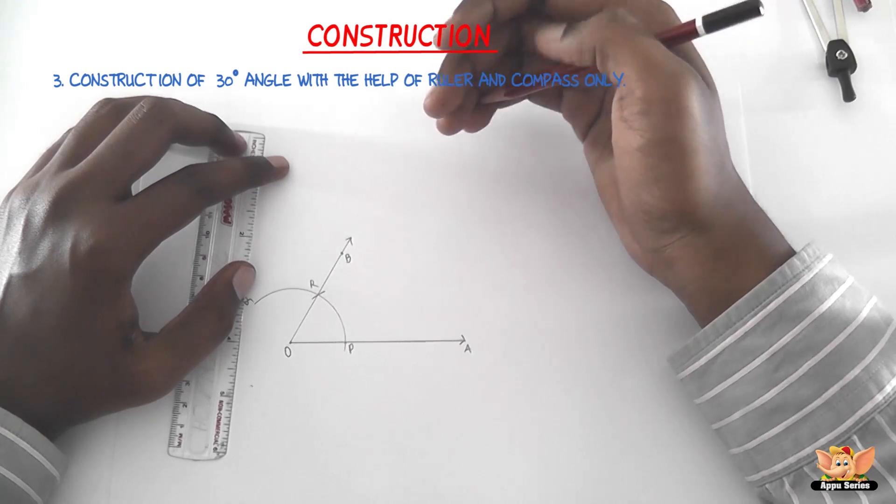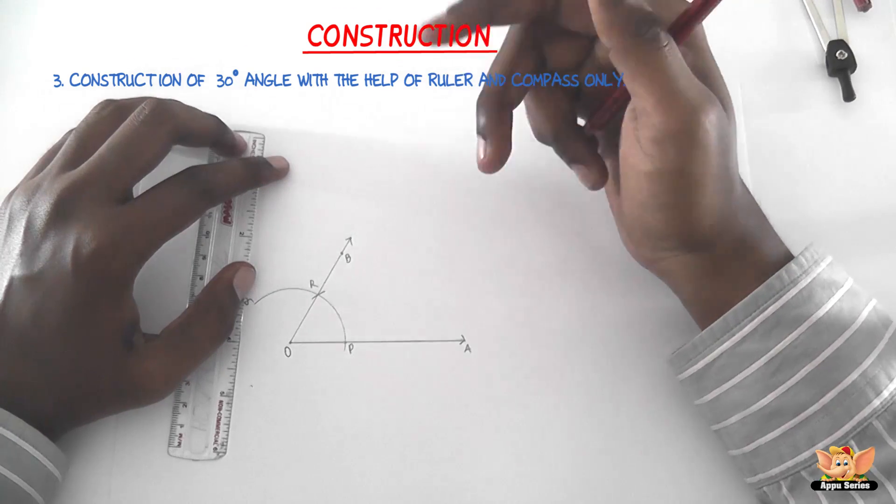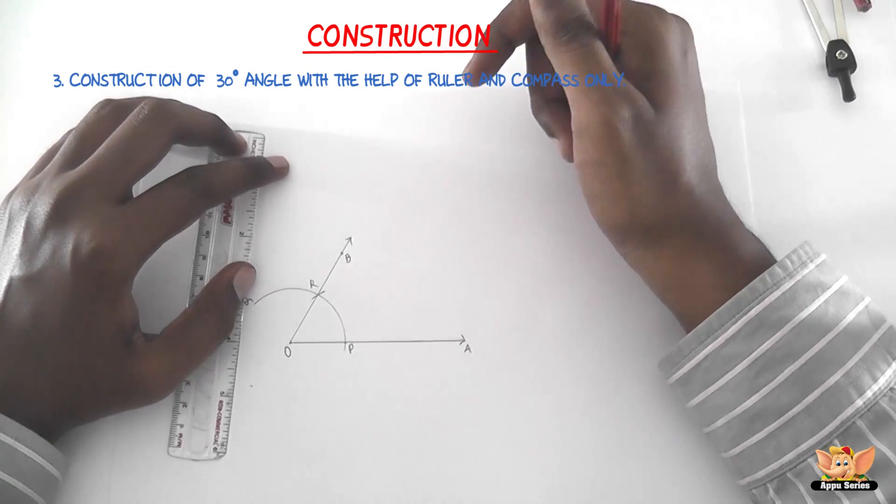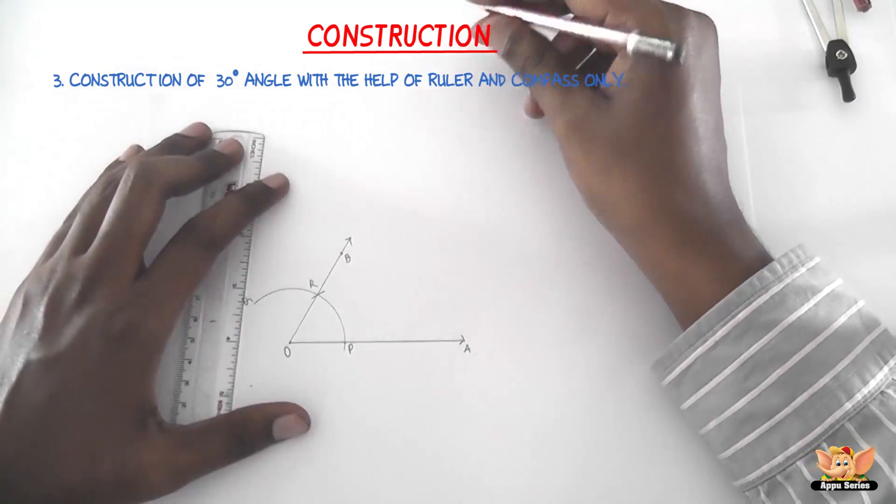But this video is going to show you how to construct an angle of 30 degrees. All we have to do is, 30 degrees is exactly half of 60, so we need to bisect 60 degrees.